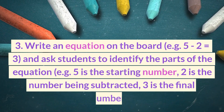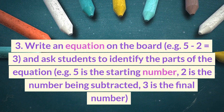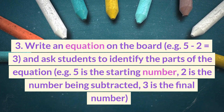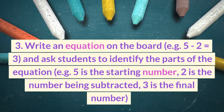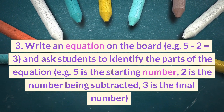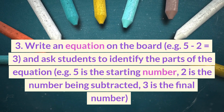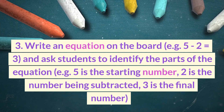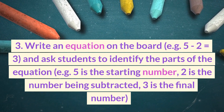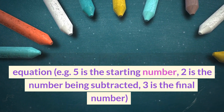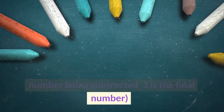Write an equation on the board, for example 5 minus 2 equals 3, and ask students to identify the parts of the equation: 5 is the starting number, 2 is the number being subtracted, and 3 is the final number.